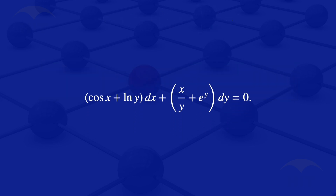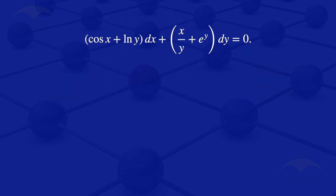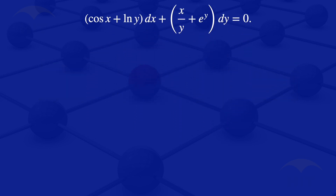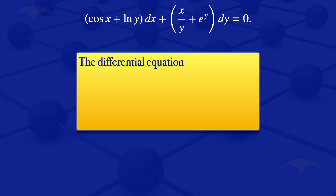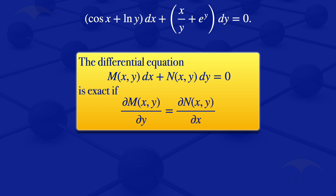Now the differential equation of the form M(x,y) dx plus N(x,y) dy equals zero is exact if the partial derivative of M with respect to y equals the partial derivative of N with respect to x.